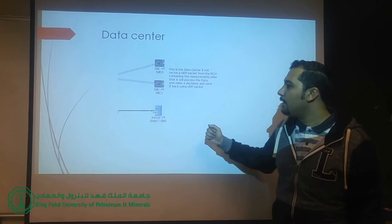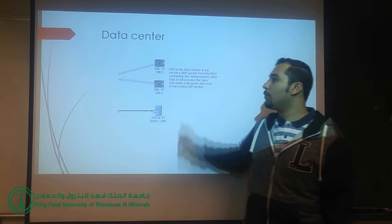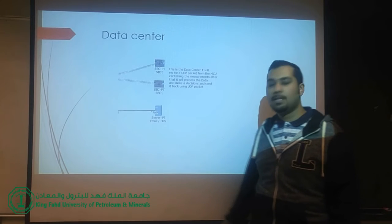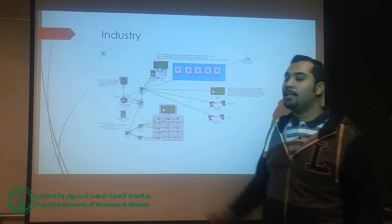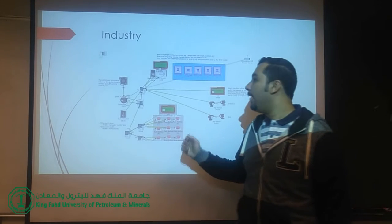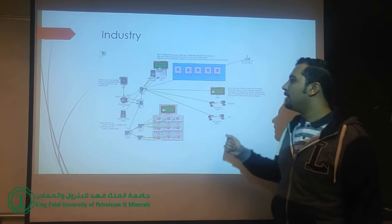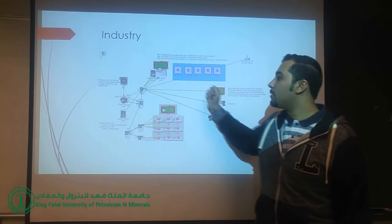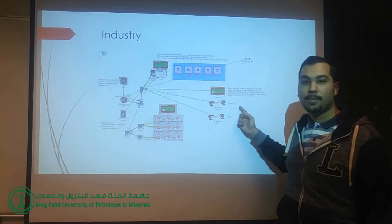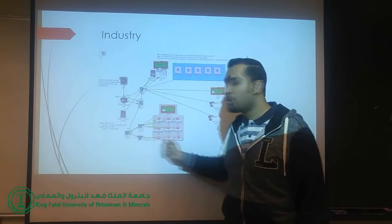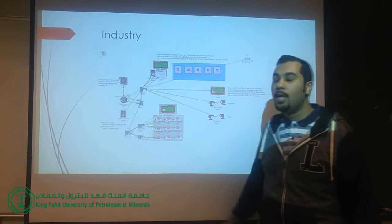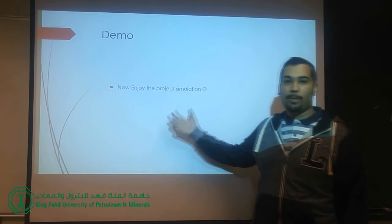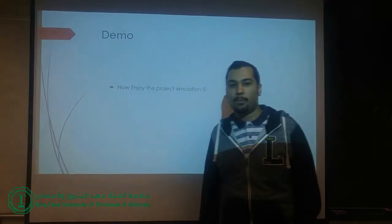This is the data center — we have two single-port computers and an email DNS server. This is the industry area, with three main subsystems: the signing in/out subsystem, the front office subsystem, and the industry control subsystem. Now we will switch to Packet Tracer to demonstrate our project.